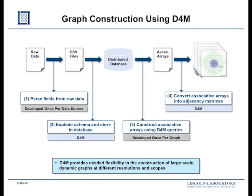Here's a bit more detail on how we use D4M for this. We take raw data, convert it to CSV files — Comma Separated Value files, the default format of spreadsheets and tables, which has become extraordinarily popular. We then read those CSV files using D4M technology to insert them into a distributed database. We can query that distributed database to get associative arrays, and from those we have the full power to do our graph algorithms.